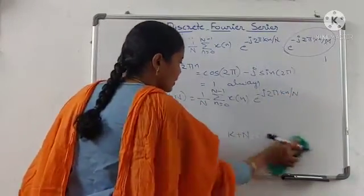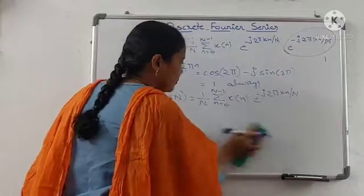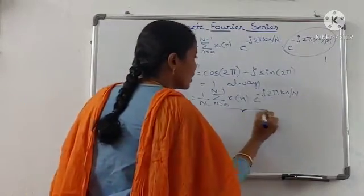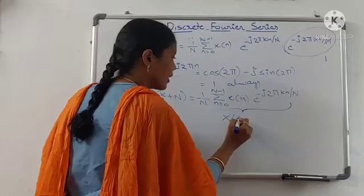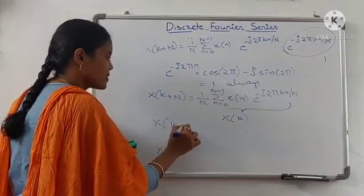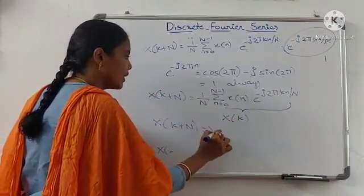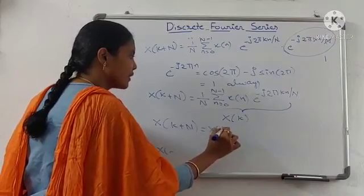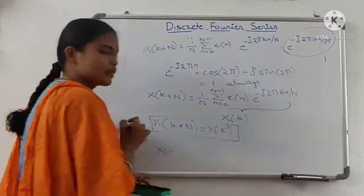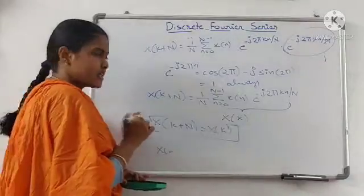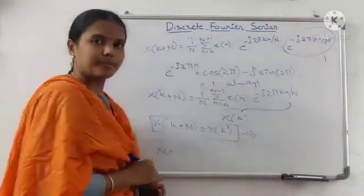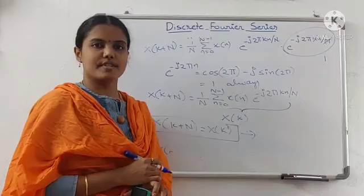So in this equation, this is nothing but X of k. Therefore, X of k plus N equals X of k. Hence, the Fourier series coefficient is also periodic.